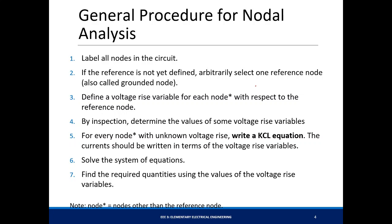First, let's look at nodal analysis. These are the steps to solve a circuit using nodal analysis — you have seven steps. First, you label the nodes in the circuit. I prefer to label them with letters. From your labeled nodes, you create a reference — we call it the grounded node. This works because we're looking at the potential at each node, and if we assume one to be a reference node, the potential difference between two nodes does not change.